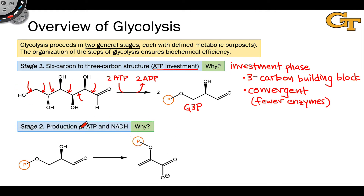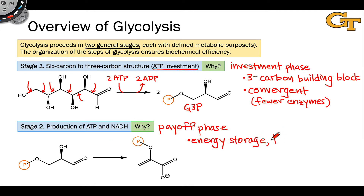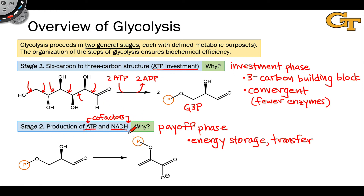In stage two of glycolysis, we get production of ATP and NADH. Because we're generating these energy-rich molecules, stage two is often called the payoff phase. The payoff of ATP is more than we invested in the investment phase, so after completion of stage two the overall process is energy-storing — there's energy stored in newly generated ATP and NADH molecules. Those ATP and NADH molecules are used to power other metabolic processes. Because these molecules are extremely common cofactors, biochemical systems have very exquisite control over how they're used, converting a general fuel in glucose into highly controlled and easy-to-manipulate fuels.